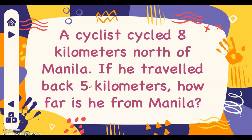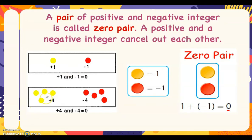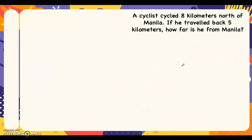Let's answer this using color chips. When you say positive, you are referring to a yellow chip or yellow circle. When you say negative, it means red chips. A pair of a positive and a negative integer is called a zero pair — a positive and a negative integer cancel out each other. So if you add a positive chip to a negative chip, it forms a zero pair equal to zero. For example, four positive chips added to four red chips forms four zero pairs, all equal to zero.